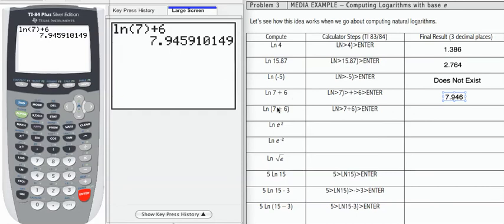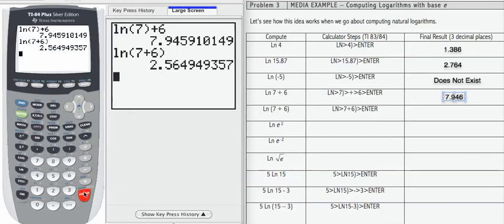I'm going to leave the first one in the calculator so you can see what happens when I include both 6 and 7 in parentheses and then take the natural log. We get a very different result: 2.565.